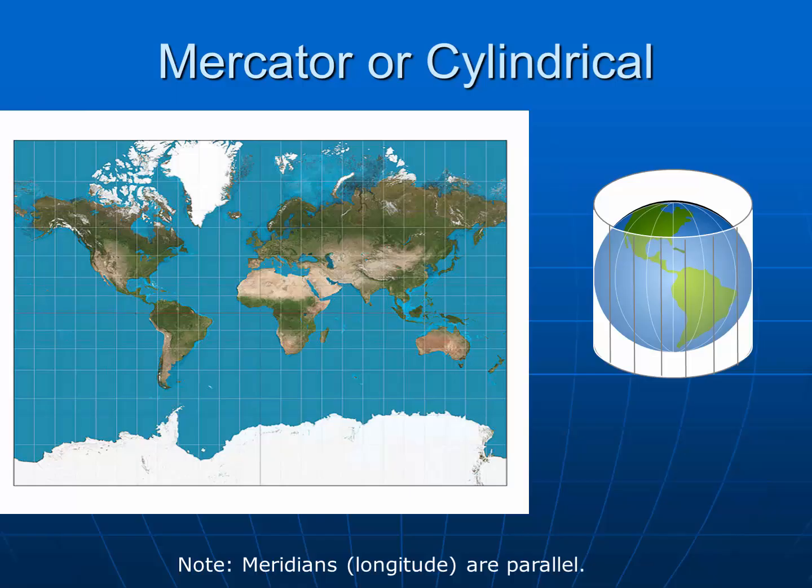While this is a very common map and one we may all recognize, you'll notice that it is quite distorting. In fact, Greenland is much smaller than Africa — almost 10 times smaller — but in a map like this, because of the distortion towards the poles, it ends up looking much bigger. So while this is a common and very useful map, it has significant errors associated with it.